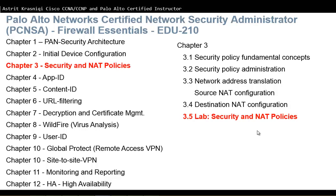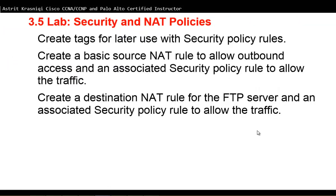In this video we put everything together — whatever we learned in Chapter 3 we put into our lab. The first thing we're going to do is create tags to use them later with the security policy. Tags are color-coded labels that enable us to group, sort, and filter objects using keywords. Then we're going to create a basic source NAT rule to allow outbound access and associate a security policy rule to allow the traffic. Then we'll create a destination NAT rule for the FTP server and create another security policy to associate with that to allow the traffic.